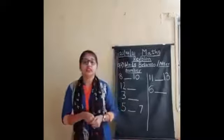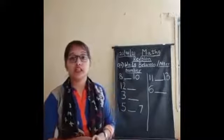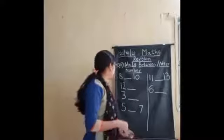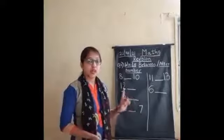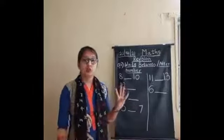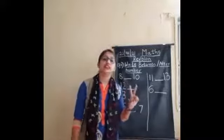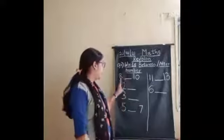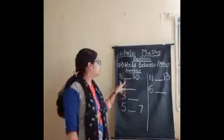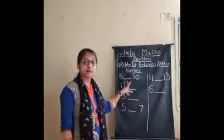We will start. Here the first question is 8 blank 10. What is our first question? 8 blank 10. We will start counting: 1, 2, 3, 4, 5, 6, 7, 8. After number 8 and before number 10, means the between number — which number comes? Number 9.